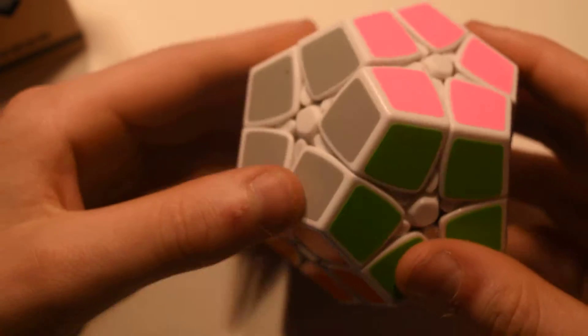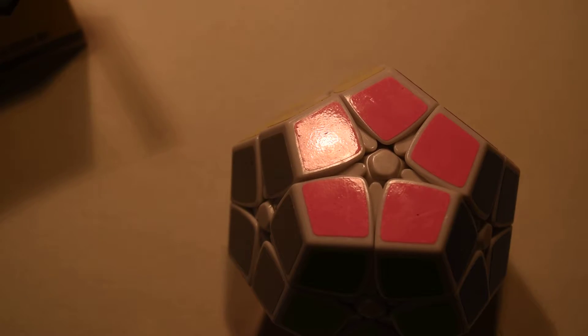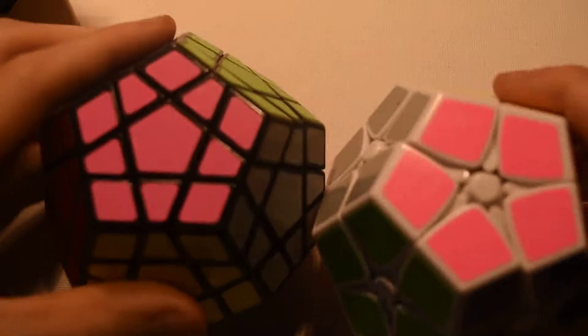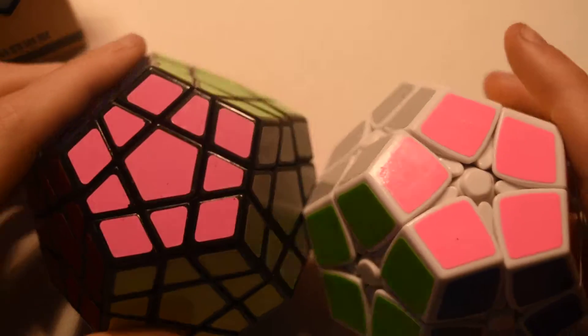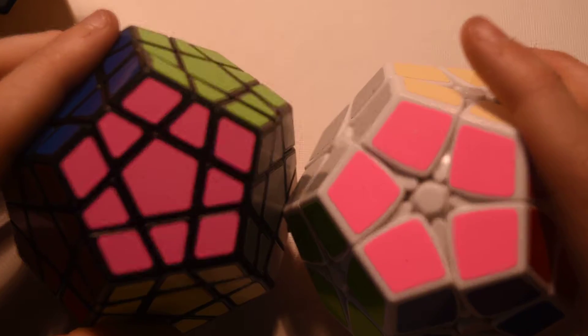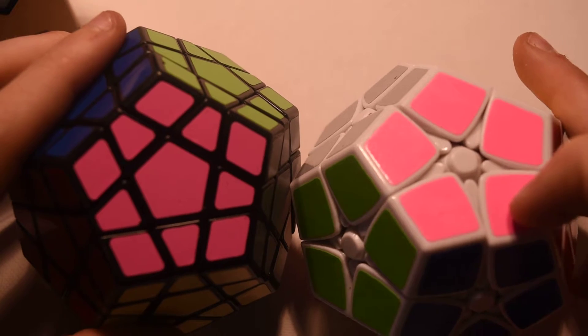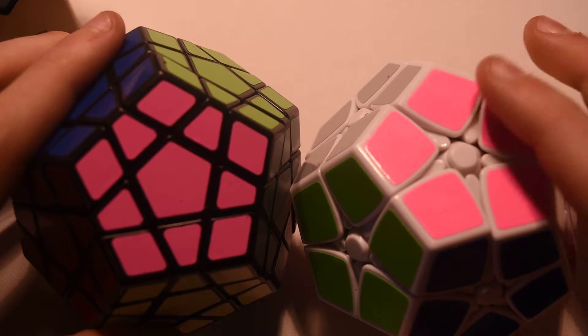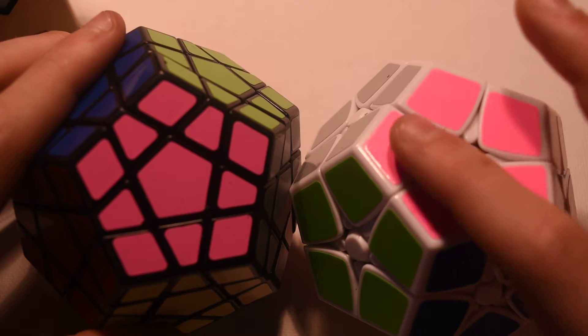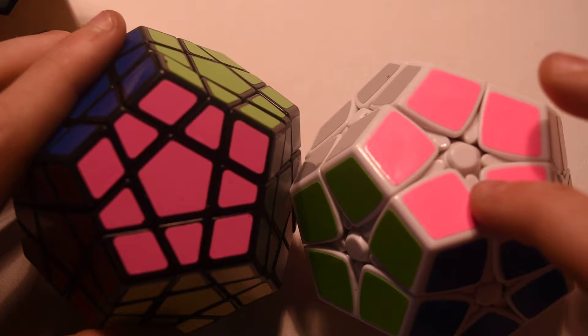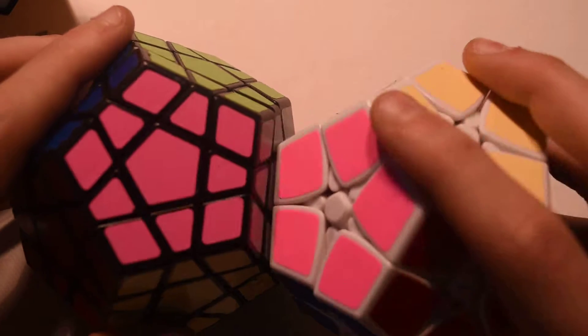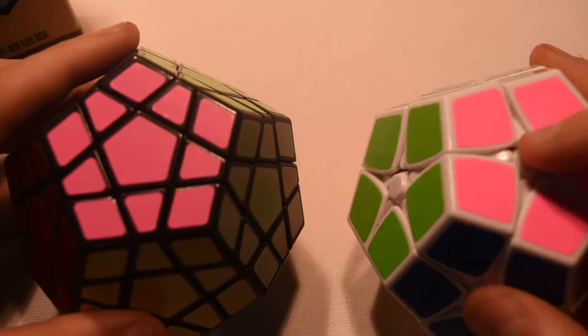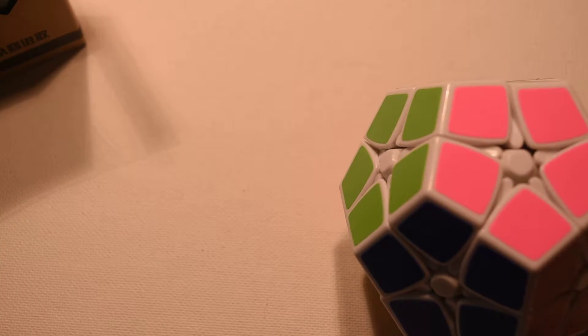So like I said, it is pretty much a Mega Minx, which if you don't know what a Mega Minx is, this is mine. But just smaller and without as many layers. So this one only has five, whereas the Mega Minx has about double that with the center, and this doesn't have a center.